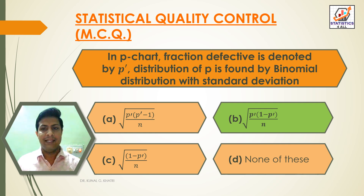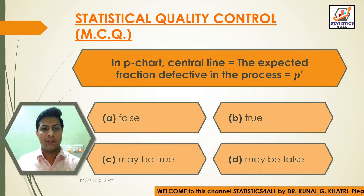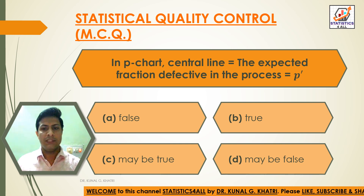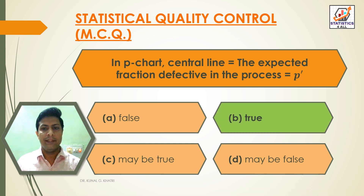Question 9: In P chart, the centerline is equal to the expected fraction defective in the process, that is equal to P-dash. Option A: False, Option B: True, Option C: Maybe true, Option D: Maybe false. Answer: Option B — True. The centerline equals the expected fraction defective, which is P-dash.